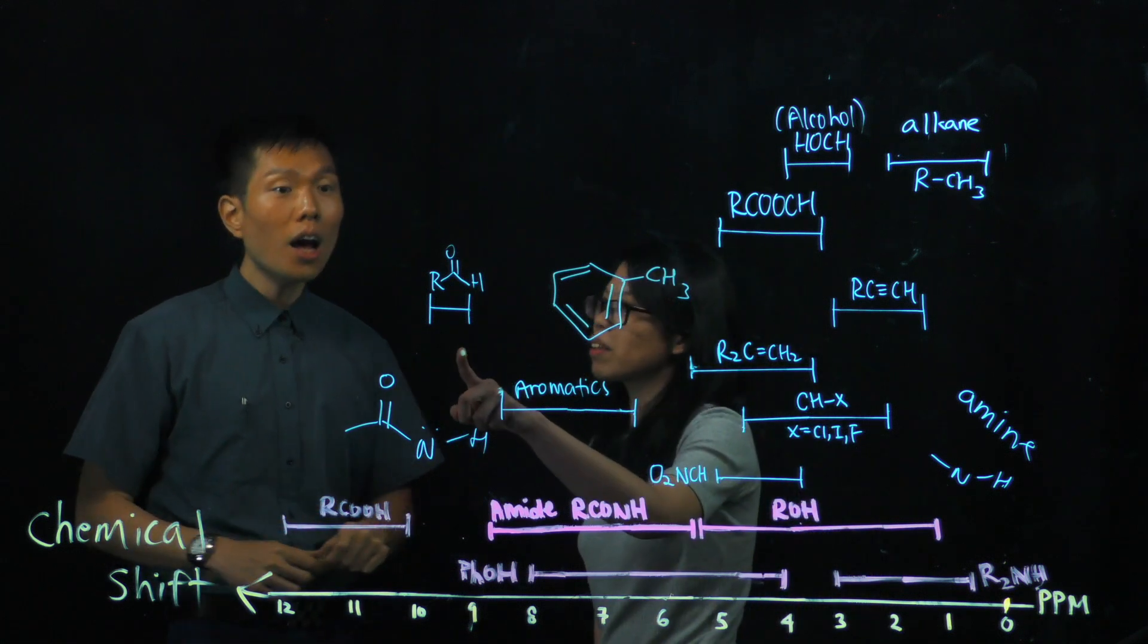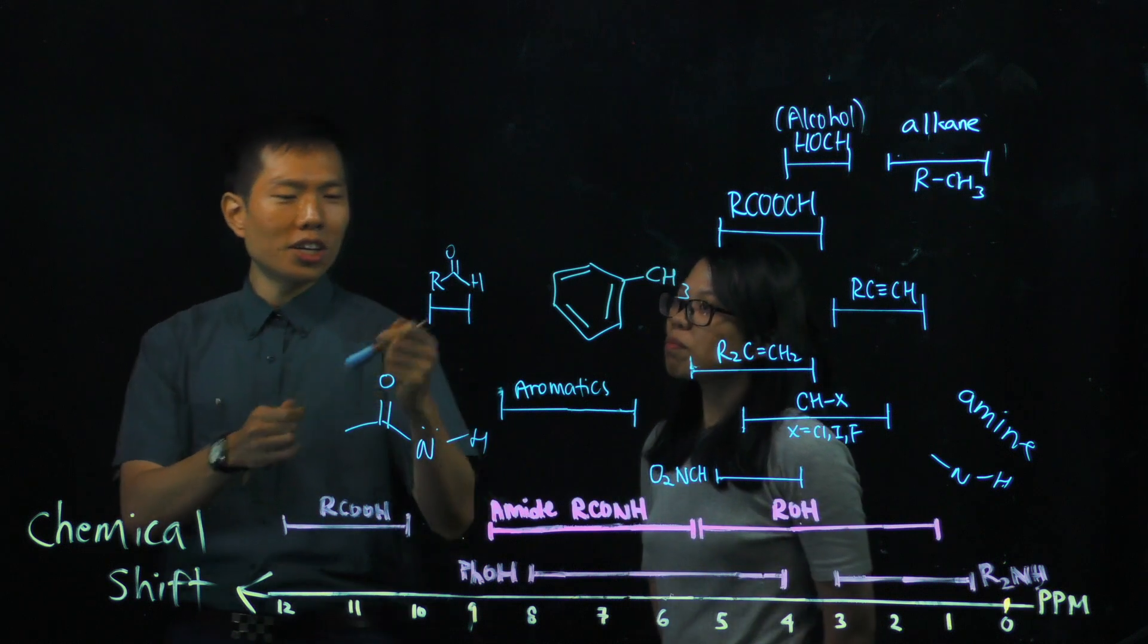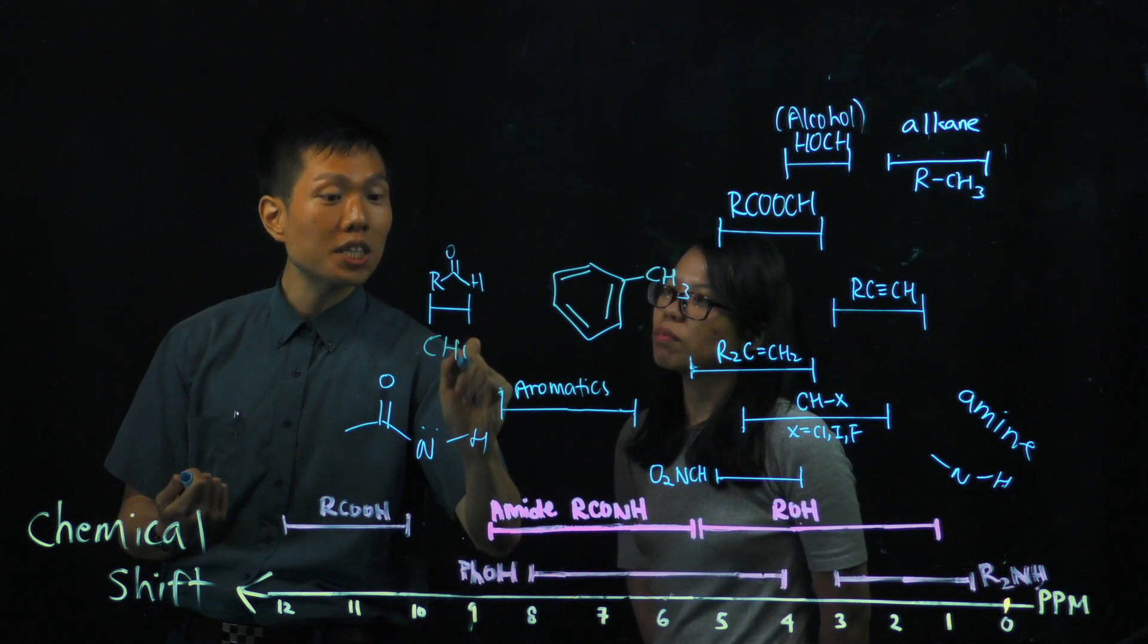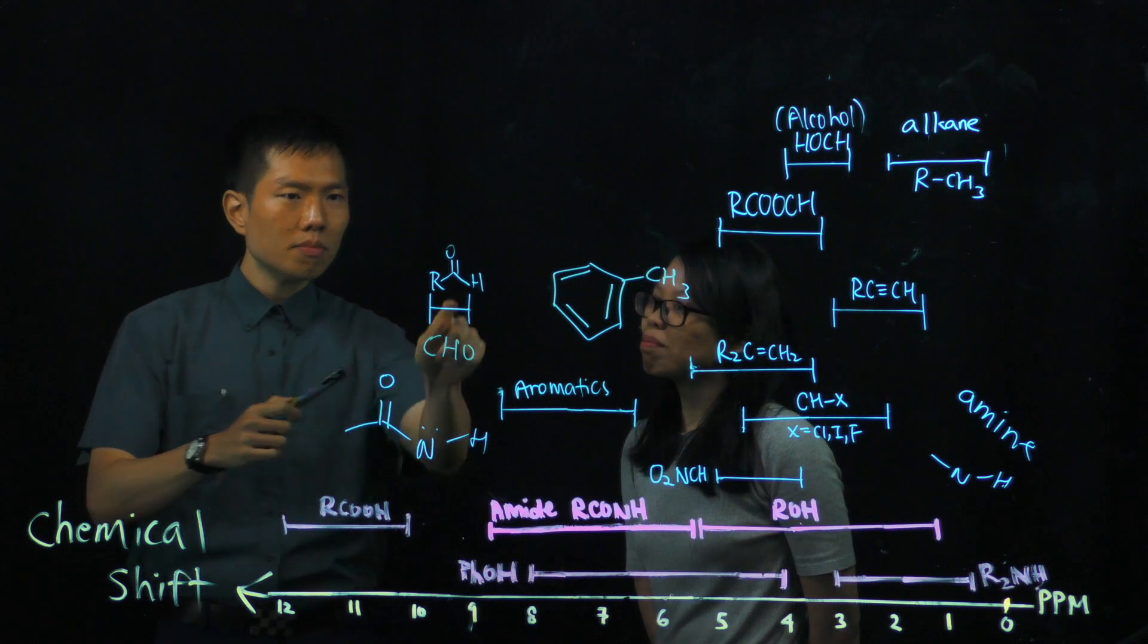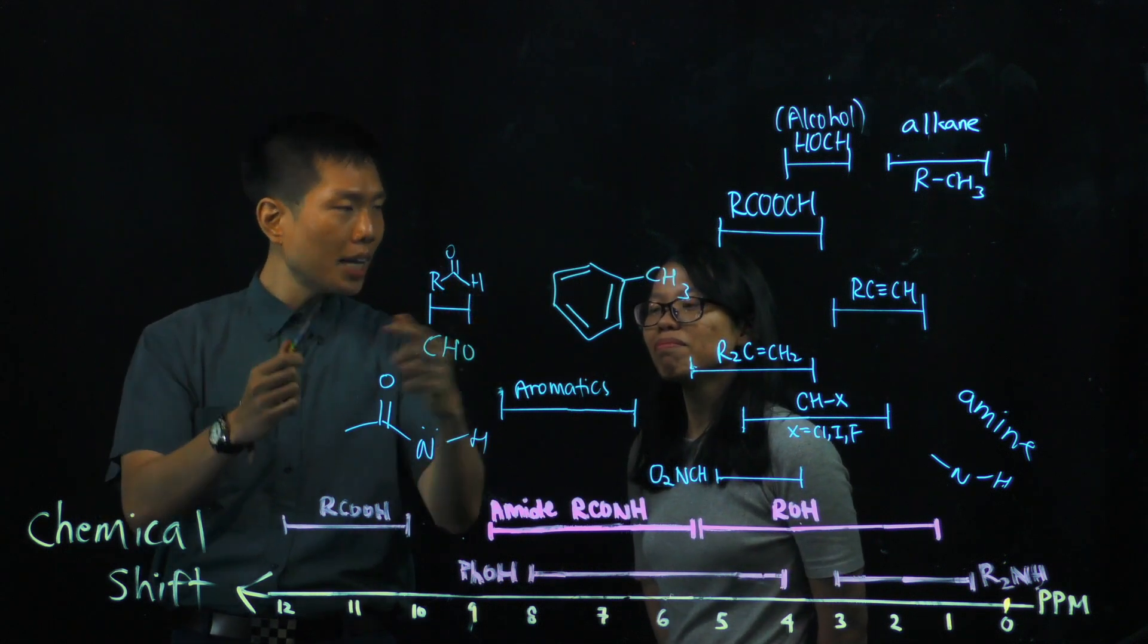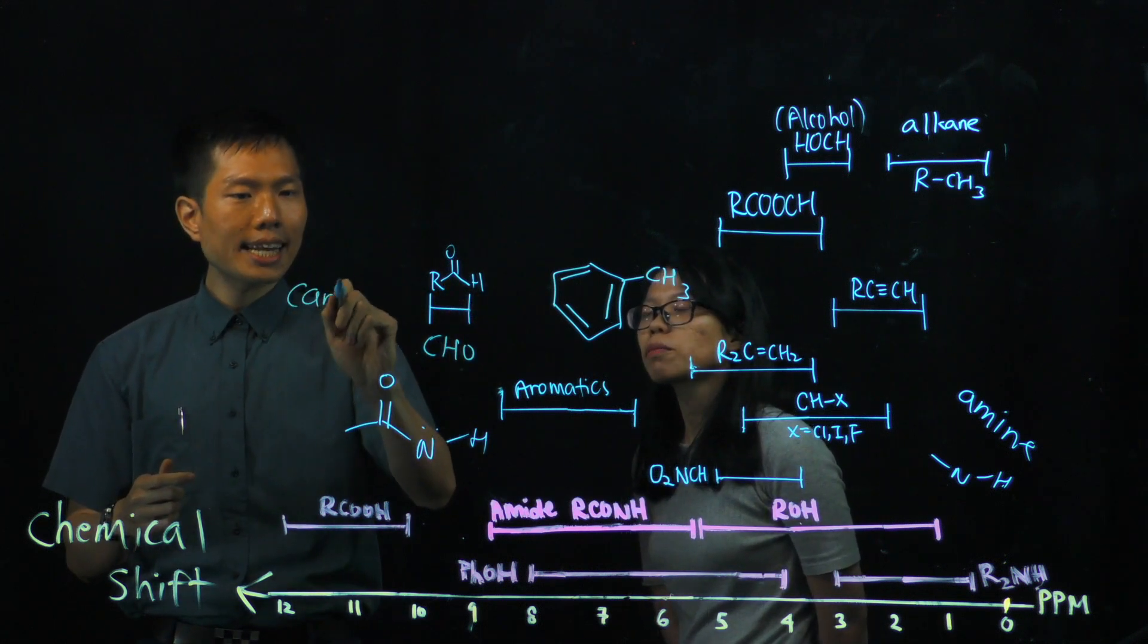Then what about this? Ah, this is what we call, in short, CHO. Okay, CHO, not the tteok in Korea, but the terminal hydrogen of a carbonyl group. So, this is an aldehyde.